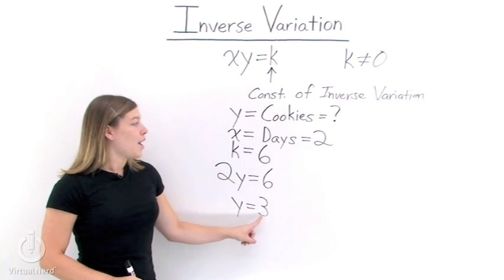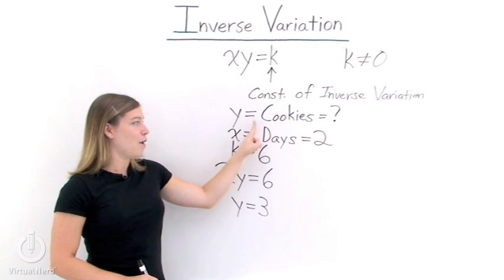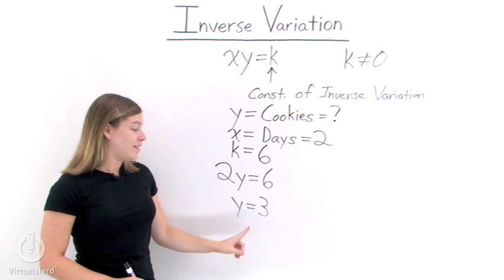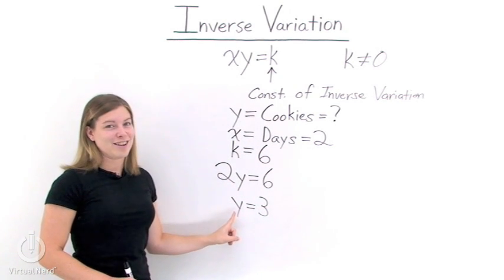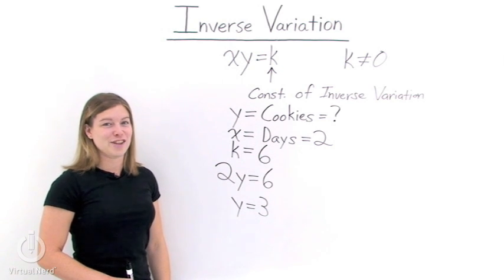Now notice that had we picked that value for x, so x being the number of cookies and y being the number of days, we still would have gotten the same answer. We would just have an x here instead of a y. So we'd still have three cookies left in the jar.